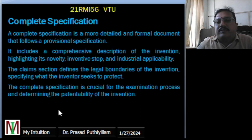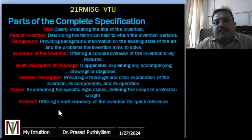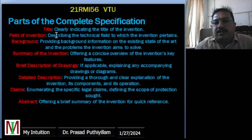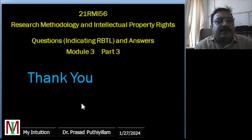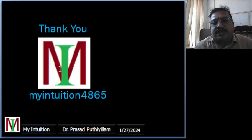Parts of the complete specification: it should have a title, field of invention, background, summary of the invention, brief description of drawings, detailed description, claims, and abstract. Thank you for watching this video. Please subscribe to my YouTube channel, MyIntuition4865. Once again, thank you and have a nice day.